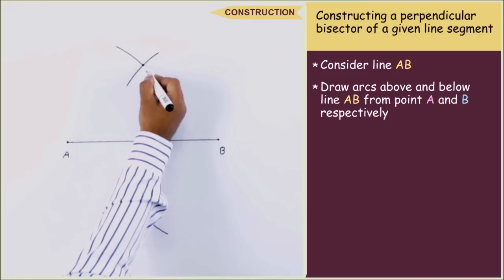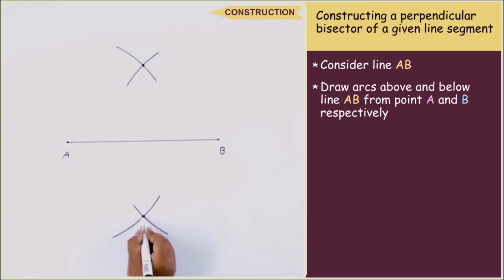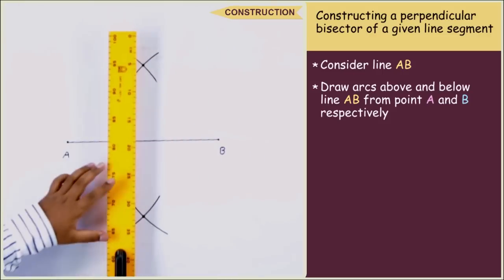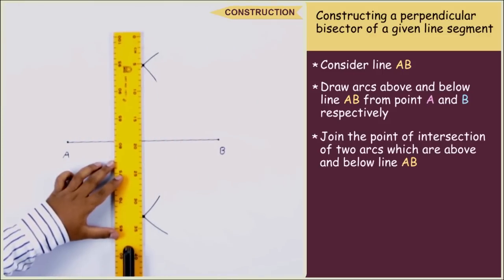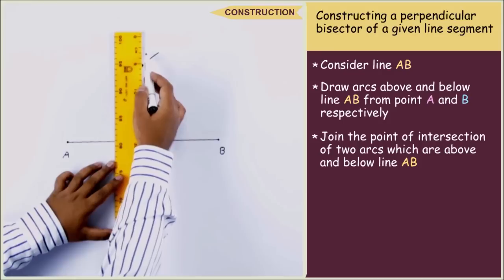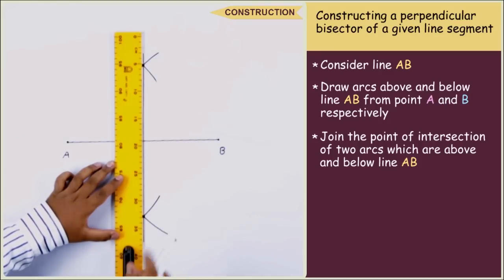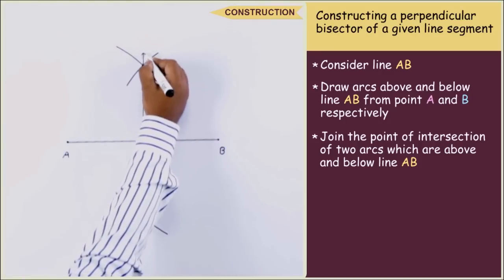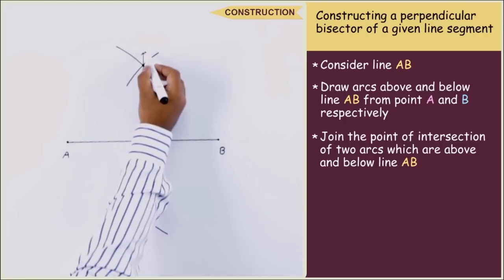Now mark the points of intersection of the arcs which we have drawn. Join these two points by drawing a straight line passing through these points. Let the straight line be called as line L.